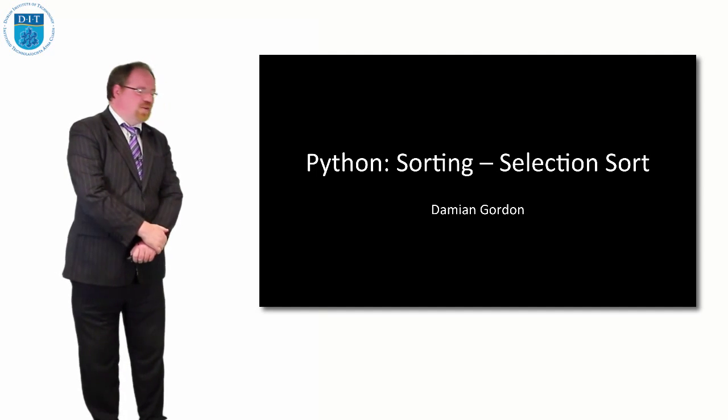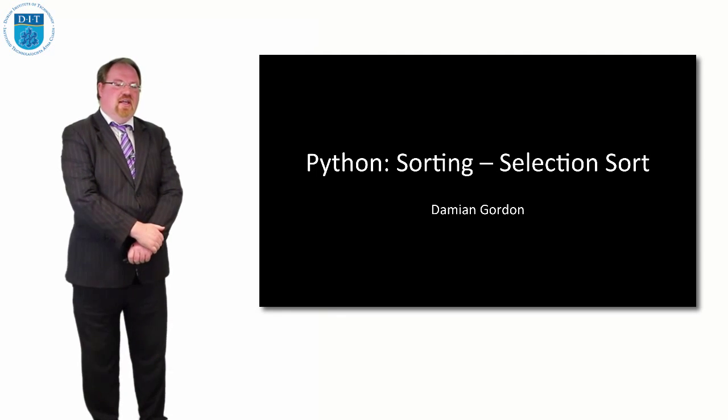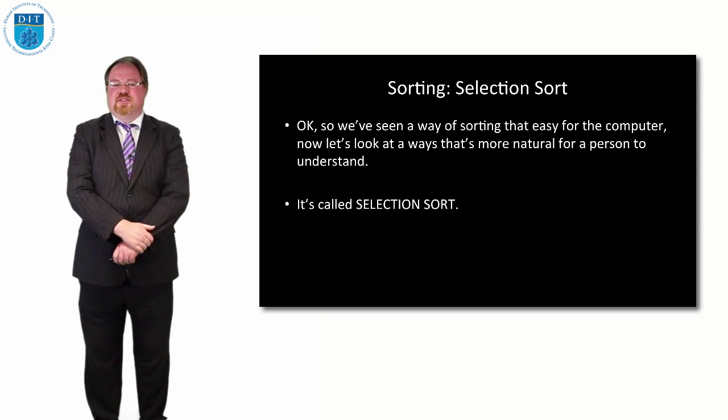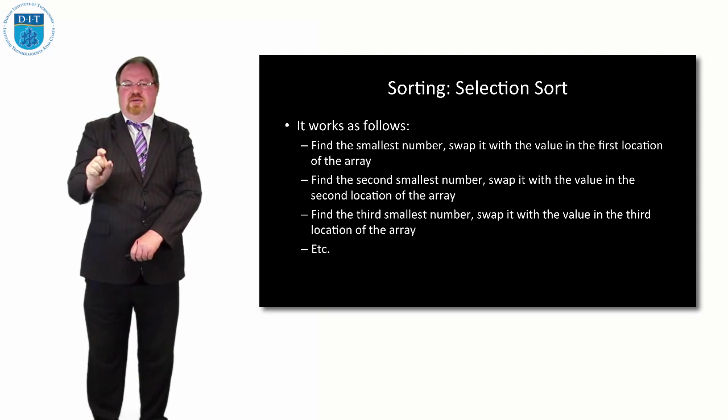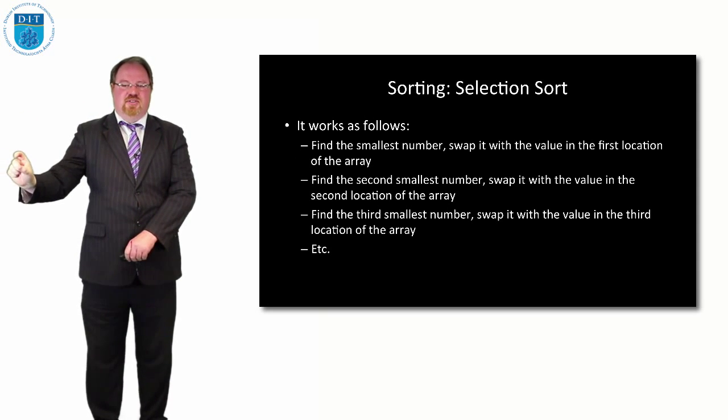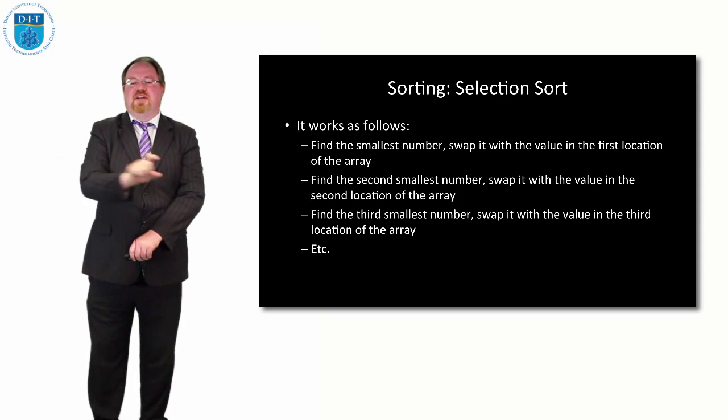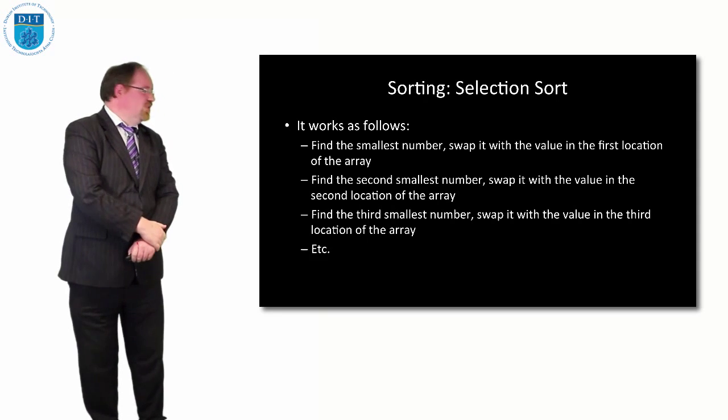So let's look at selection sort first. We'll remember we had looked at bubble sort in pseudocode already, and we said selection sort is about finding the smallest number in the list and sticking that in the first position, finding the second smallest number in the list and putting that in position 2, finding the third smallest and putting it in position 3 and so on.